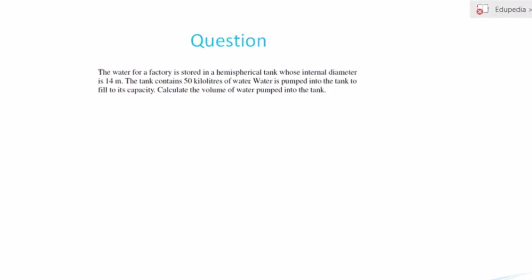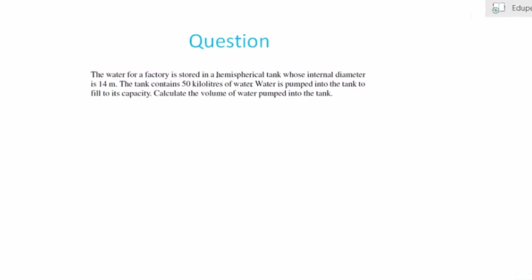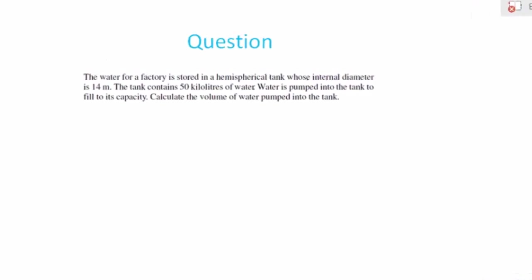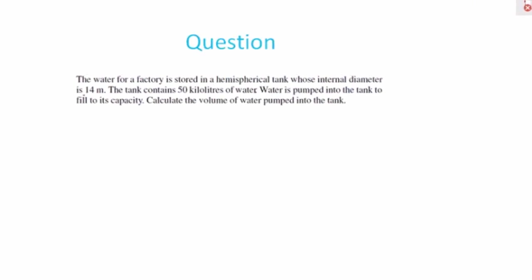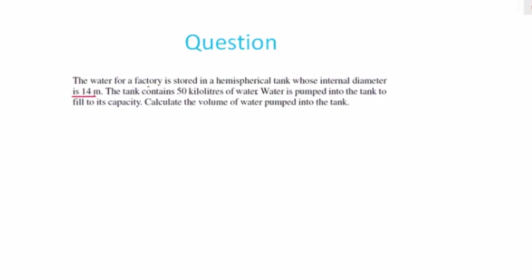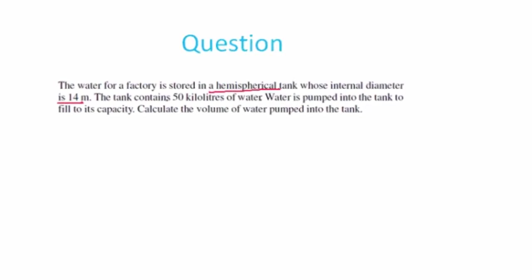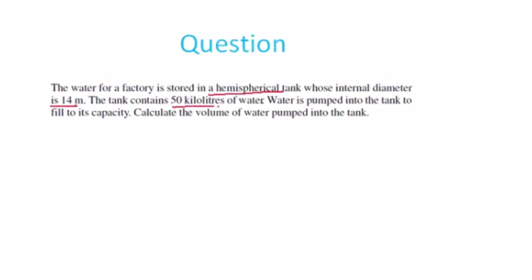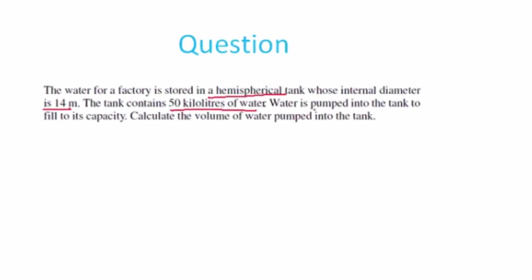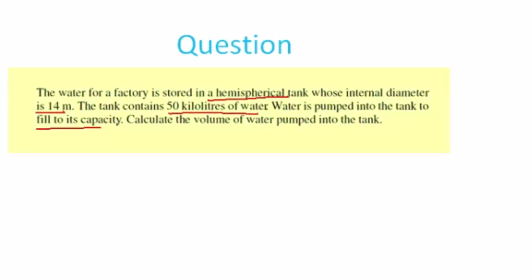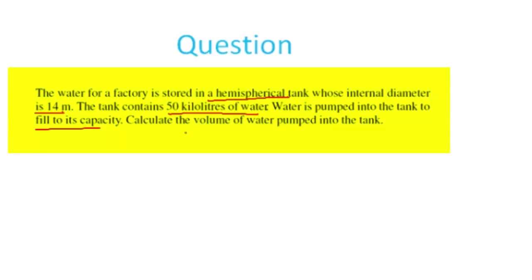The question says that the water for a factory is stored in a hemispherical tank whose internal diameter is 14 meters. The tank contains 50 kilolitres of water. Water is pumped into the tank to fill its capacity. We need to calculate the volume of water pumped into the tank.